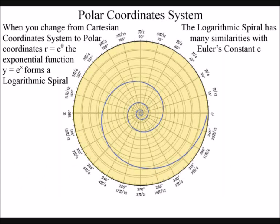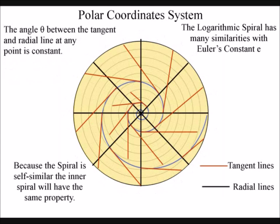This can be seen if we draw a tangent line of the spiral in red. The radial lines that started from the center point of the spiral are in black. What we find is the angle between any pair of these two lines will be the same, and since it is self-similar, the inner spiral will have the same property.